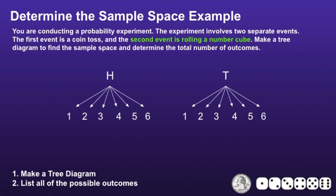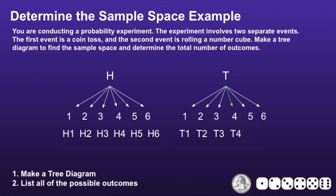This moves us on to step number two: list all the possible outcomes. We can do this by following the arrows. The possible outcomes are H1, H2, H3, H4, H5, H6, T1, T2, T3, T4, T5, and finally T6. So altogether, there are twelve possible outcomes.